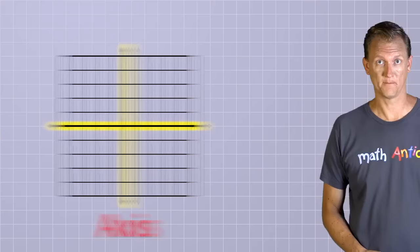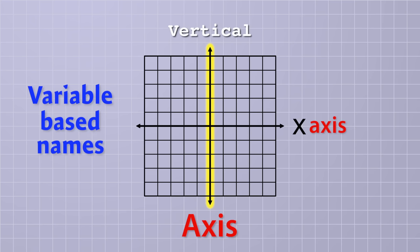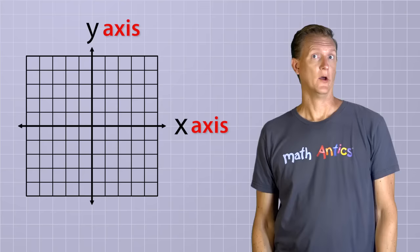From now on, we're going to refer to each one of these number lines as an axis. One of the axes is horizontal, like the horizon, which means the other axis is vertical, or straight up and down. And they're often called the horizontal and vertical axes because of that. But even more often, the axes are referred to by variable-based names. The horizontal axis is called the x-axis, and the vertical axis is called the y-axis.